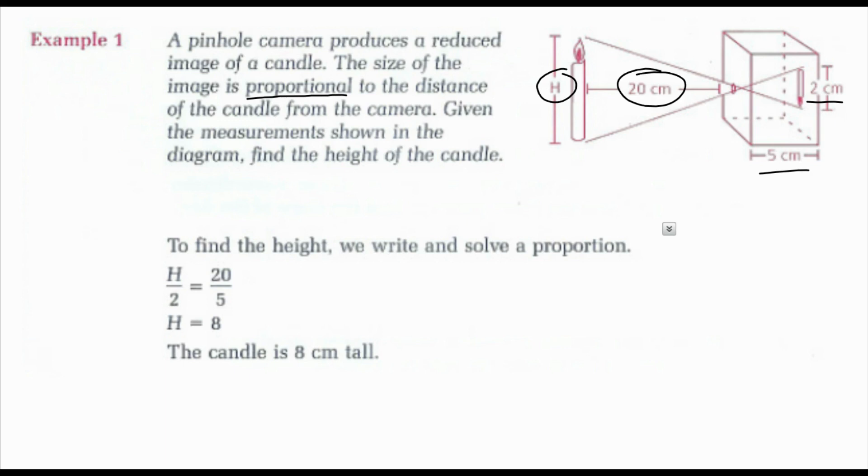Now if I set up a different proportion, let's say I kept my smaller size together, and then my larger size together, I could have 2 over 5. If my height of the smaller candle is on top, then I need h on top, and I could have h over 20. If I still multiplied this out, this would give me a height of 8 still. I can create many different proportions. I just need to make sure that I'm consistent in keeping the same things together. So the candle here is 8 centimeters tall.